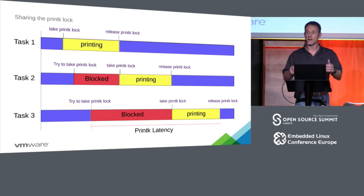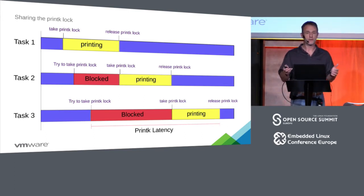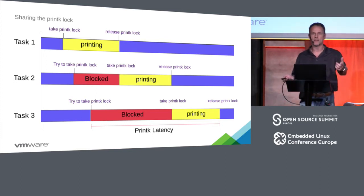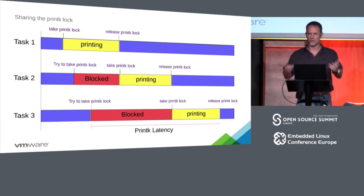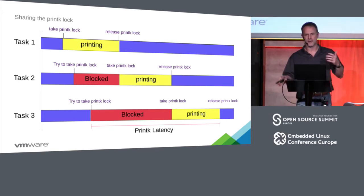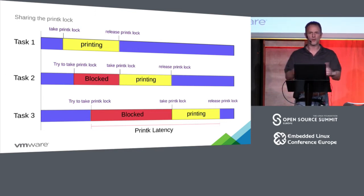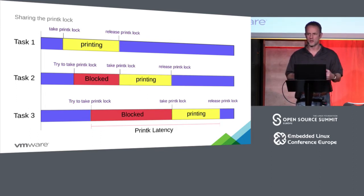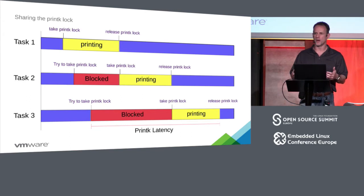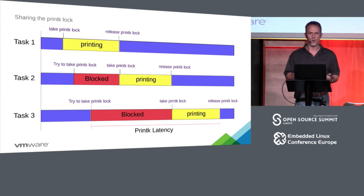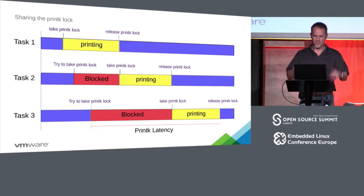If you had eight CPUs all doing a printk, that printk could take easily 10 milliseconds each if it's a slow modem or something like that. The whole system is locked up — and people don't really like it when they're in the middle of playing an online video game and the system locks up because everything's tied to printk.